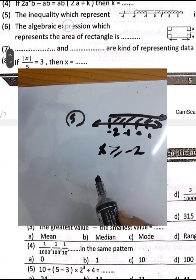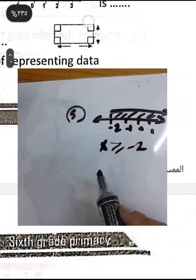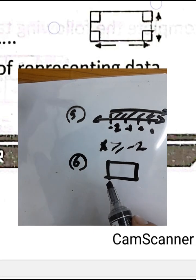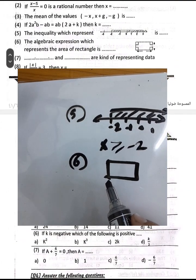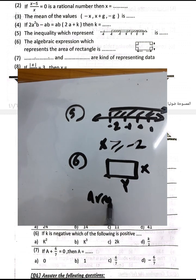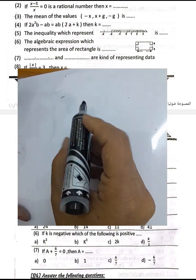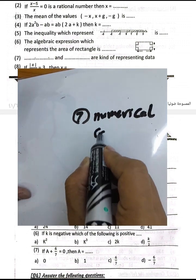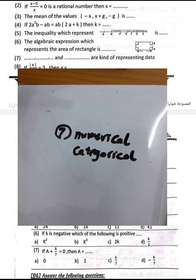Question number 6: The algebraic expression representing the area of a rectangle. Area equals length times width. If we have sides x and y, then the area equals x times y. Question number 7: Space and space are kinds of data representation — numerical and categorical data.